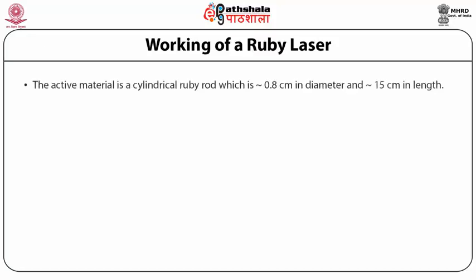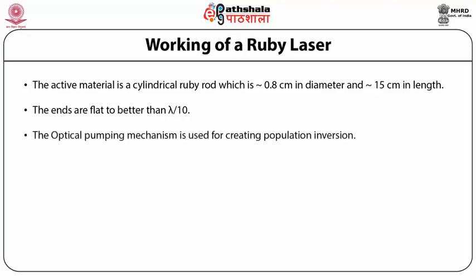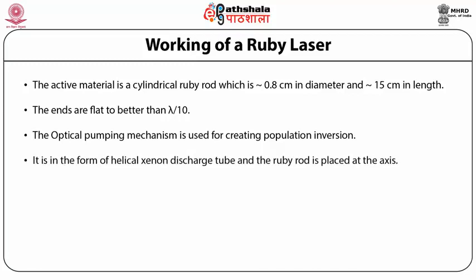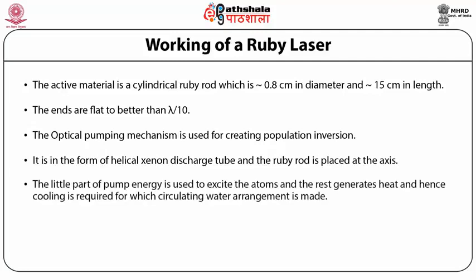The active material is a cylindrical ruby rod, around 0.8 centimeter in diameter and 15 centimeter in length. The ends are flat to better than lambda by 10, and the cylindrical surface of the rod is ground to prevent total internal reflection. Optical pumping is used for creating population inversion, in the form of a helical xenon discharge tube with the ruby rod placed at the axis. The little part of pump energy excites the atoms; the rest generates heat, requiring a circulating water cooling arrangement.